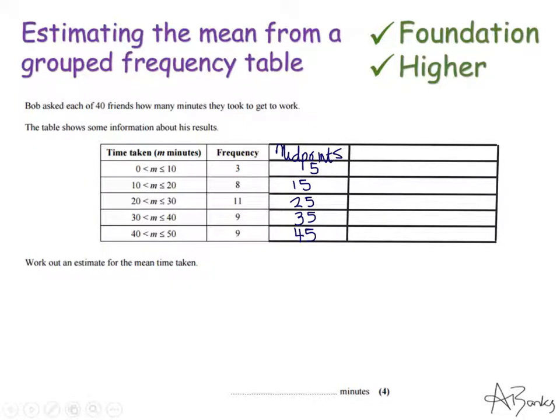So now I've got my midpoints I need to find what I think the total time taken for all these people to get to work is. So I have three people here that I am guessing took five minutes to get to work. So these three people in total took 15 minutes to get to work. This next one I have eight people who I'm guessing took 15 minutes each to get to work. So their total is 120.